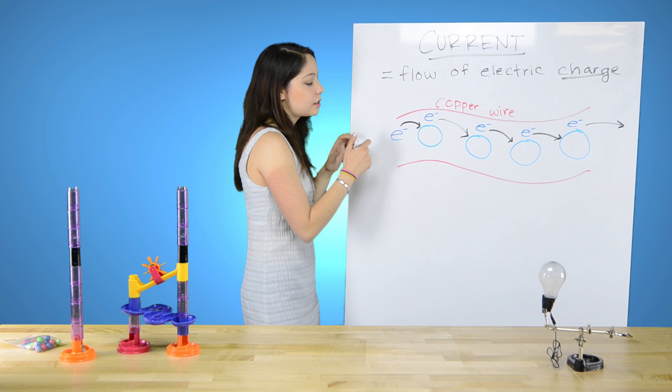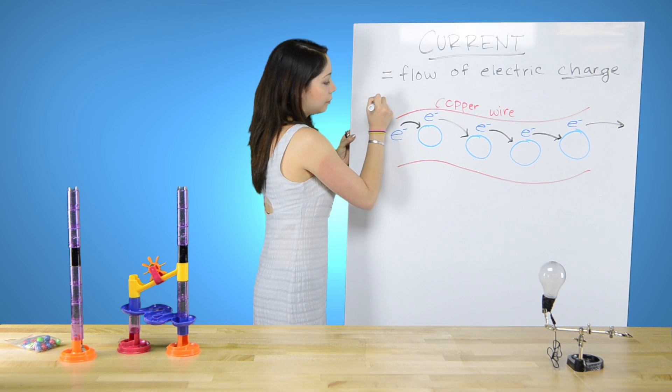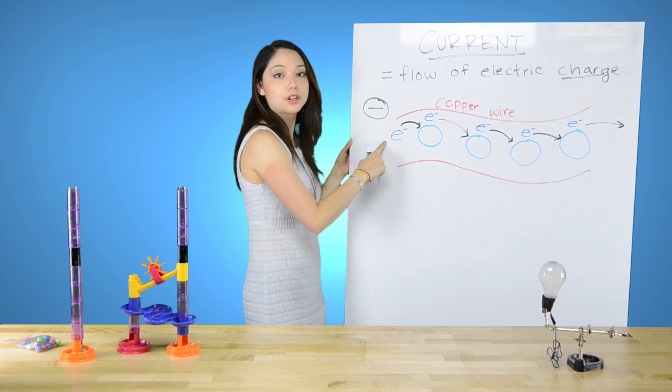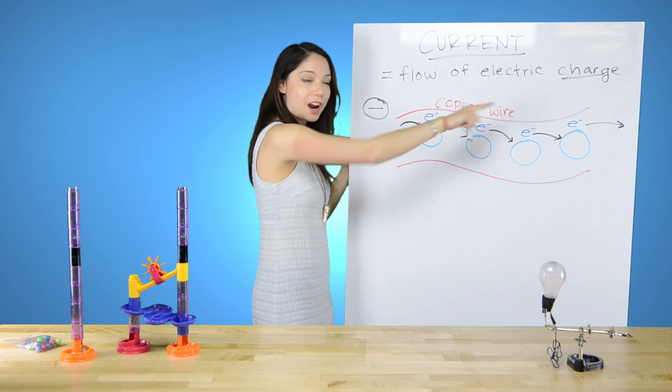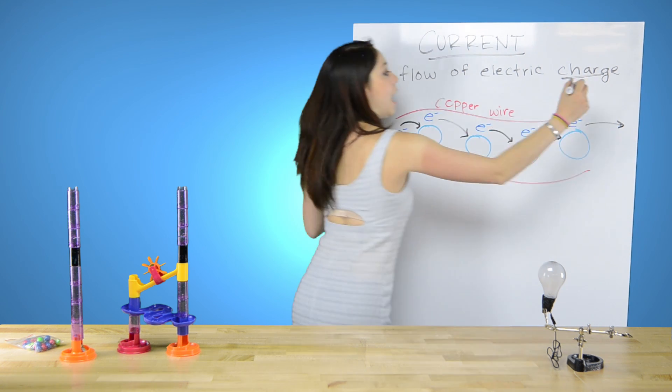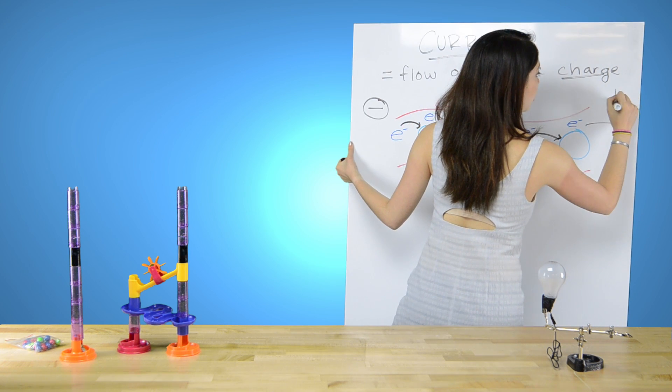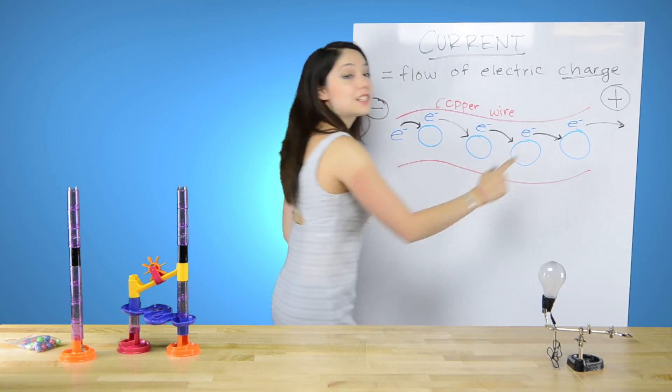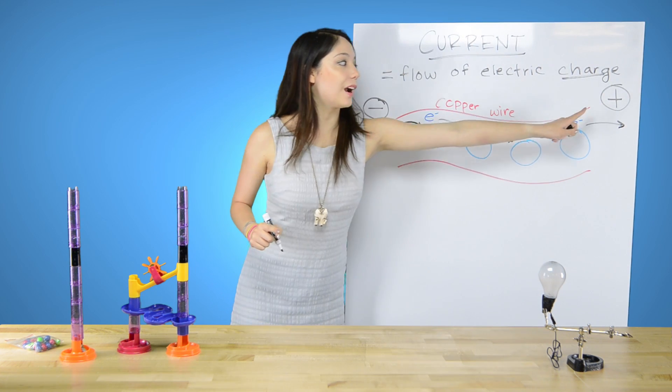As you can imagine, this is the negative end of the wire, because the electron came from this end, and it's attracted to positive.